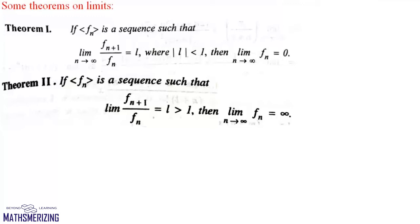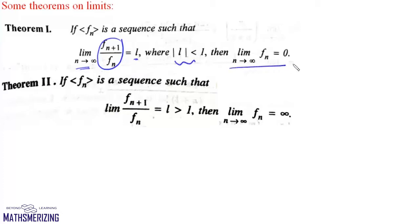There are some theorems which you can use while solving limits. If f(n) is a sequence such that limit n tends to infinite of f(n+1) upon f(n) is equal to l, where mod l is less than 1, then limit n tends to infinite of f(n) will be 0. And if l is greater than 1, then f(n) diverges to infinity.